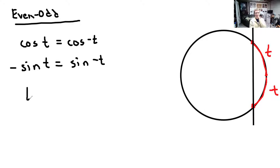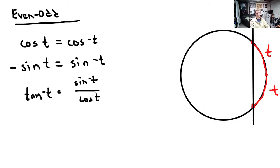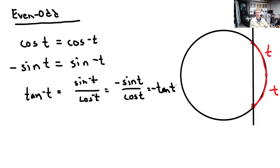Tangent of t is sine of t over cosine of t. If we plug in negative t: sine becomes negative sine of t (odd function), and cosine remains cosine of t (even function). So tangent of negative t equals negative tangent of t — tangent is odd. The reciprocals follow: secant is even, cosecant is odd, cotangent is odd.